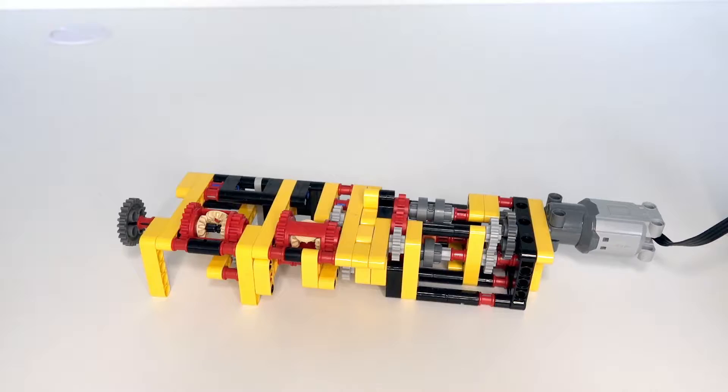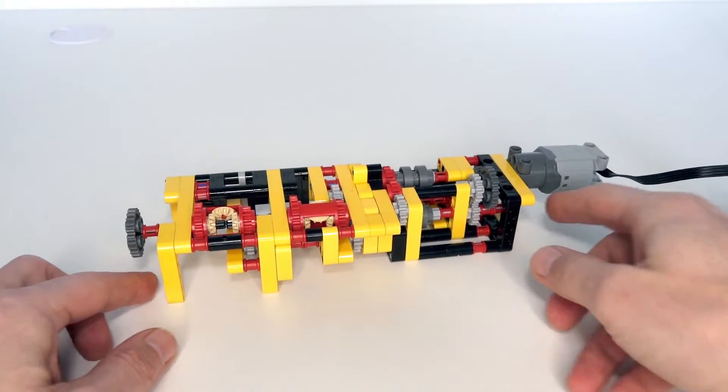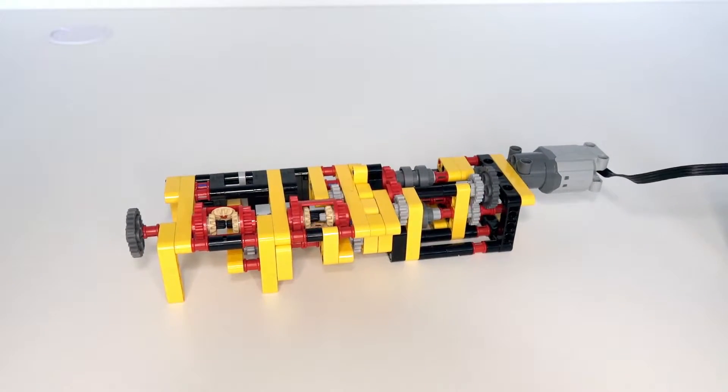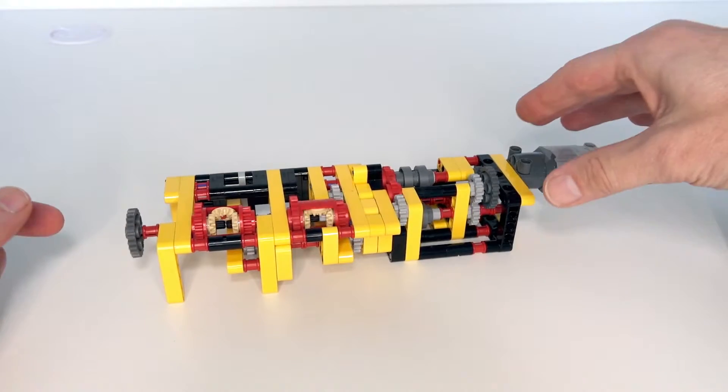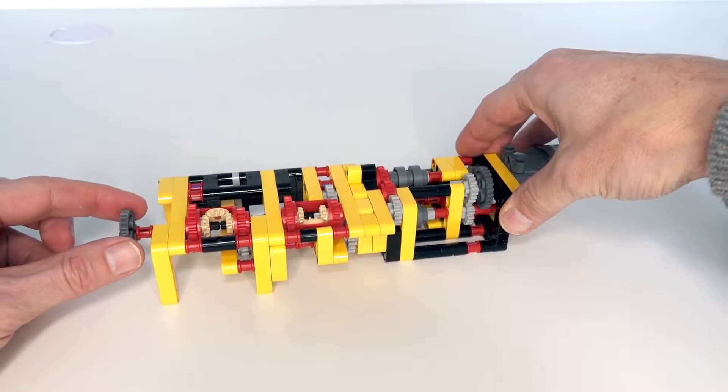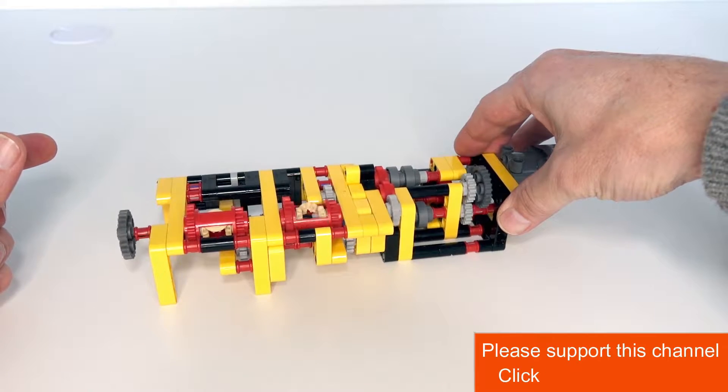Probably the best way to explain it is with a demonstration, so I'll just turn it on. As we can see over here, we've got the output. Now if we put some loading on that output like this, you can see it automatically turns around.